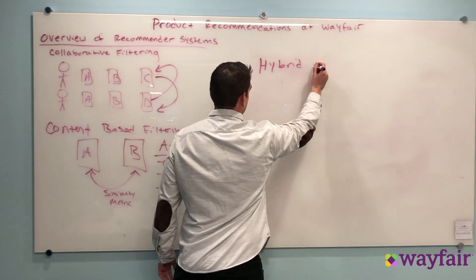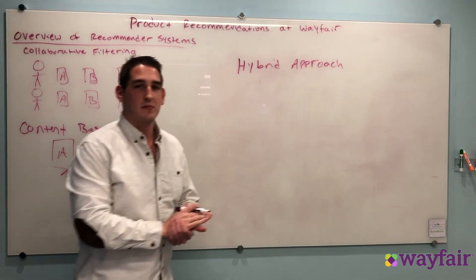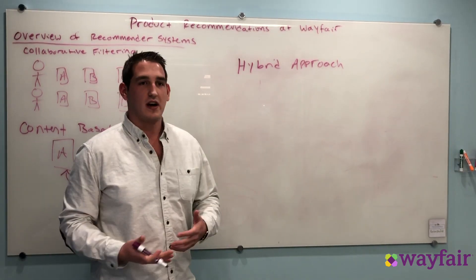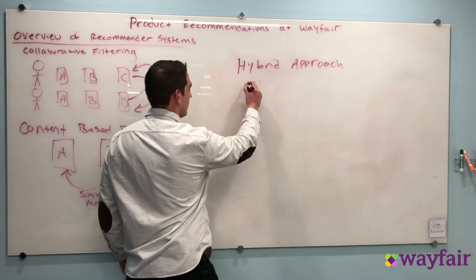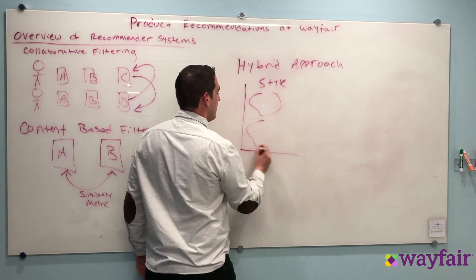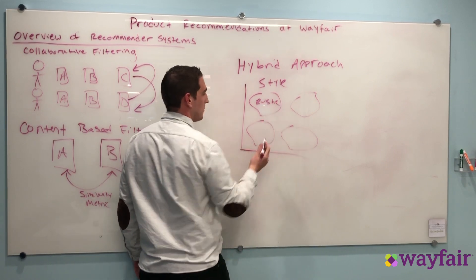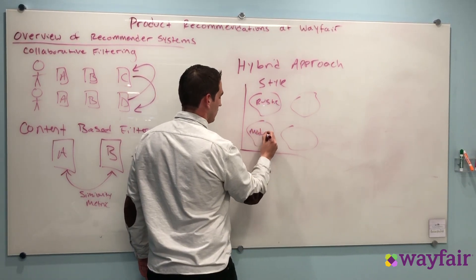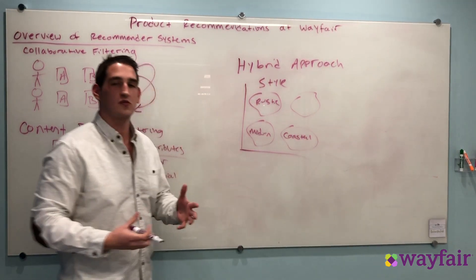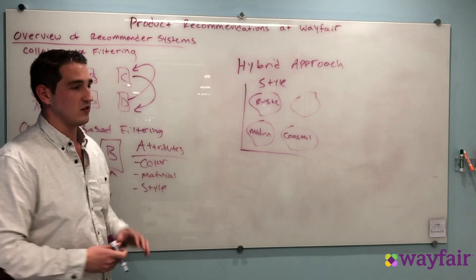Another way that we think about doing recommendations at Wayfair is based on hybrid approaches. A hybrid approach incorporates both pieces of information from content-based methods and behavioral-based methods. The way we think about doing this at Wayfair is using a deep neural network architecture to create a metric space that encodes style. This means basically putting clusters of items together in this space that represent different types of furniture — so maybe we have rustic furniture in one region of this space, modern furniture in another, and coastal furniture in a third region.